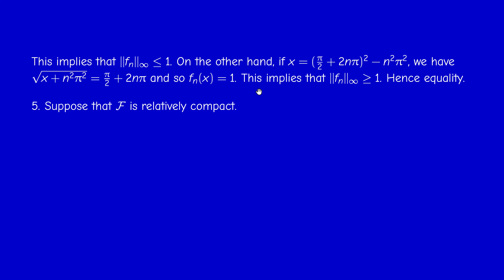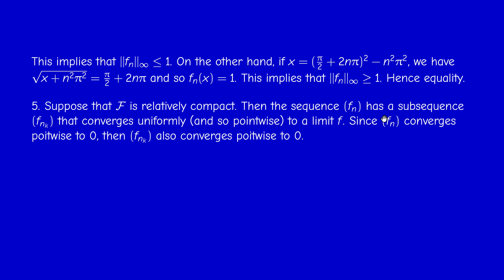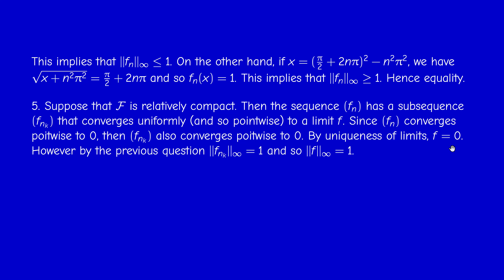For question 5: we prove F is not relatively compact by contradiction. If F were relatively compact, then every sequence in F — in particular fₙ — would have a convergent subsequence converging in the norm ‖·‖_∞ (i.e., uniformly) to some limit f. But the whole sequence converges pointwise to 0, so the subsequence also converges pointwise to 0. By uniqueness of limits, f = 0. But by the previous question, each fₙ belongs to the unit sphere, so the limit must also belong to the unit sphere, giving a contradiction since f = 0.